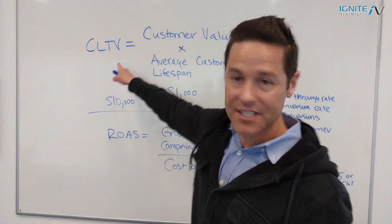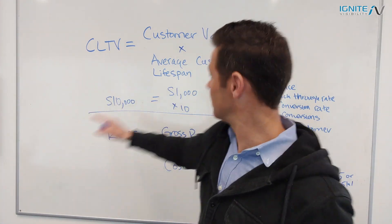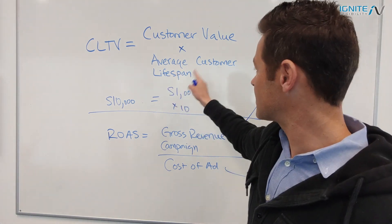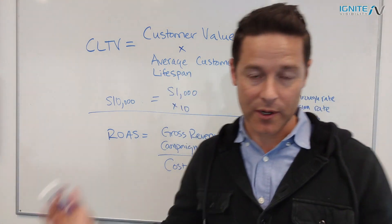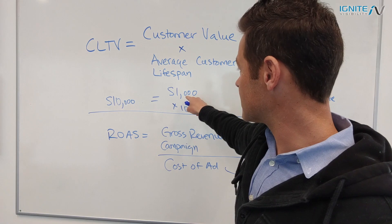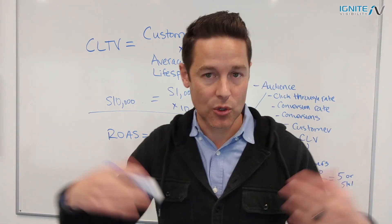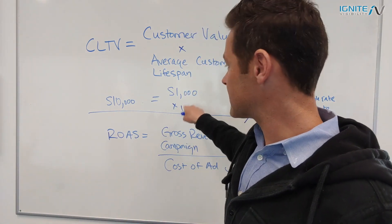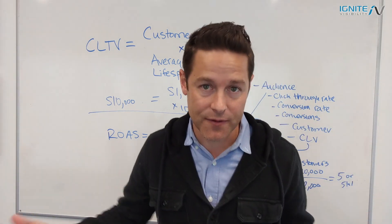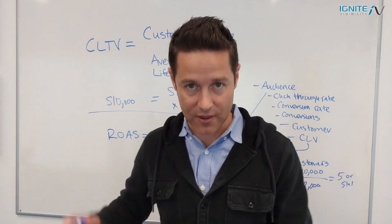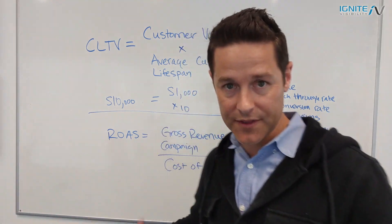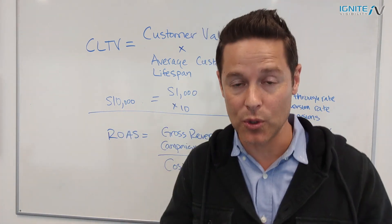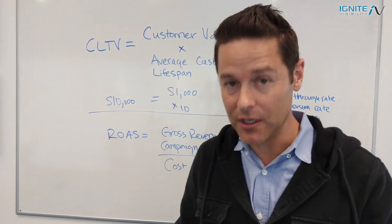Customer lifetime value equals customer value times average customer lifespan. For example, $1,000 of customer value — total transactions and all that — times 10 months gives you $10,000. You can use whatever duration makes the most sense. That $10,000 is your total customer lifetime value.